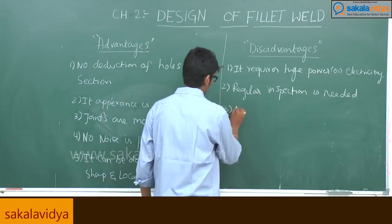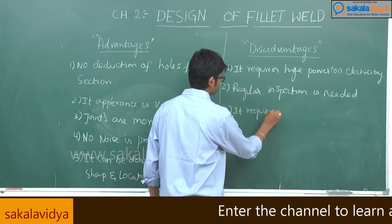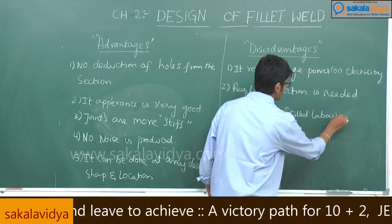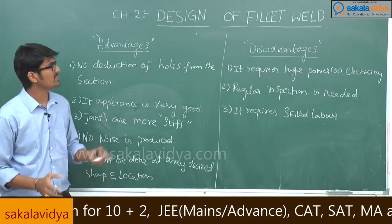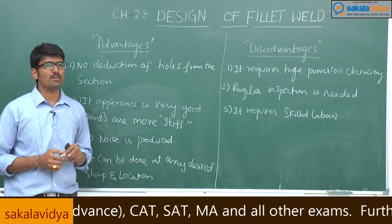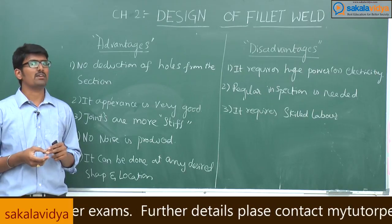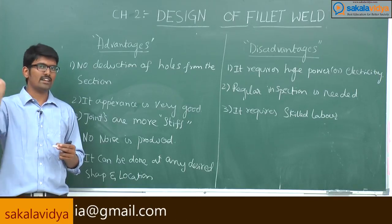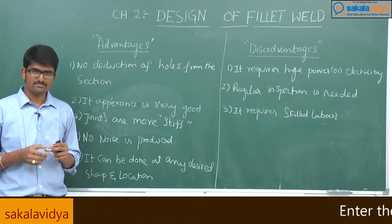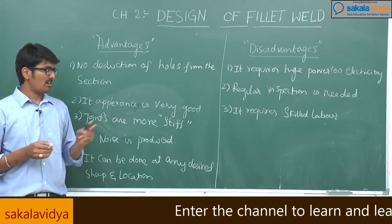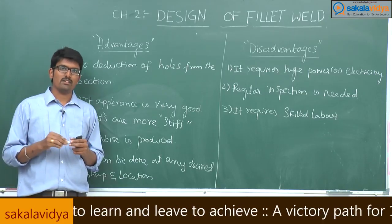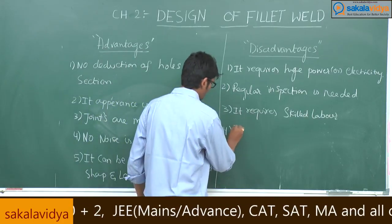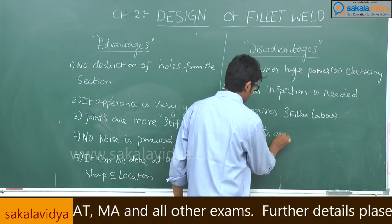The third disadvantage is that it requires skilled labor. The person must have proper knowledge of welding — how to place metals at proper angles. Normal people cannot do welding, whereas bolting and riveting are simpler. Bolting means fixing a nut, and riveting means hammering in place. Welding requires professional skill and proper knowledge.